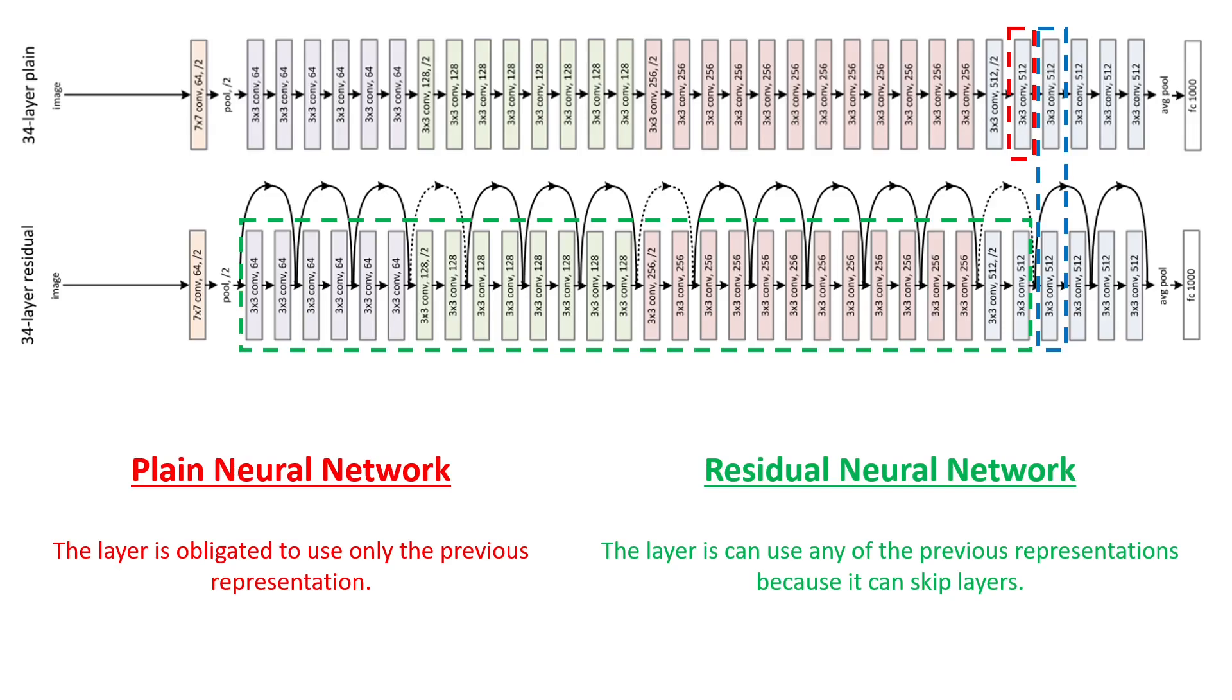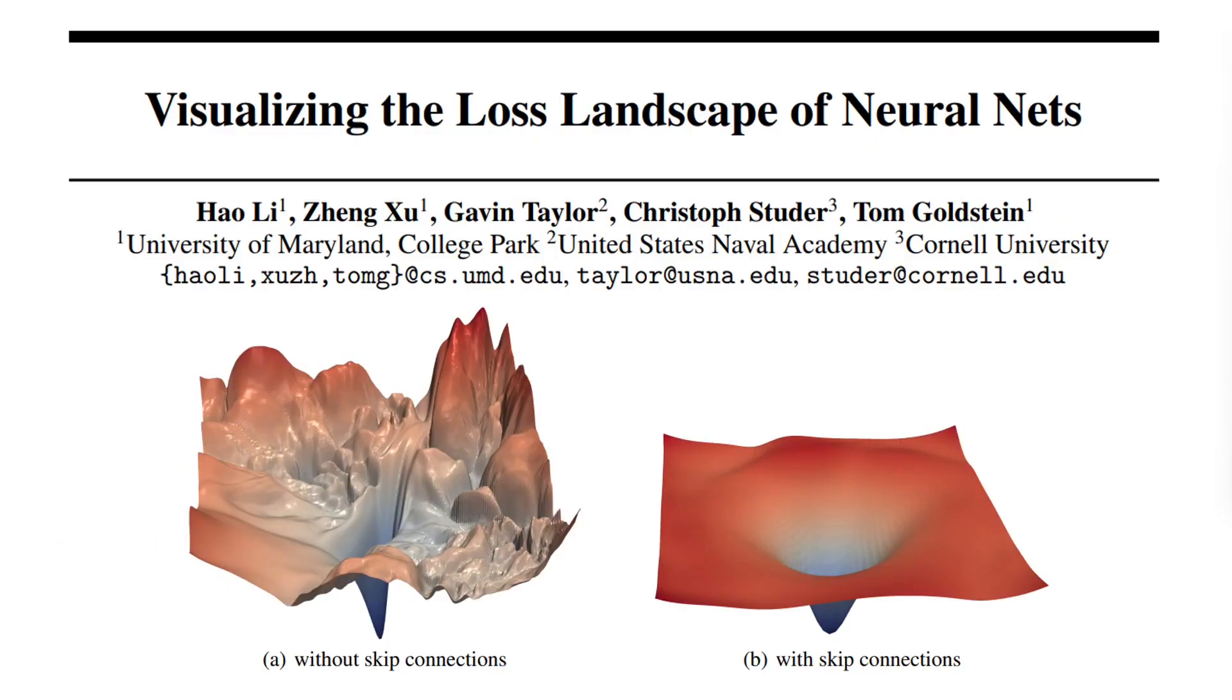And I believe that this is especially useful for very deep neural networks because the model is not forced to modify along the layers the representation if it doesn't consider it necessary. And there are many studies that try to find why skip connections work so well, and here the authors argue that they make the loss space smoother and more convex as illustrated in these figures.